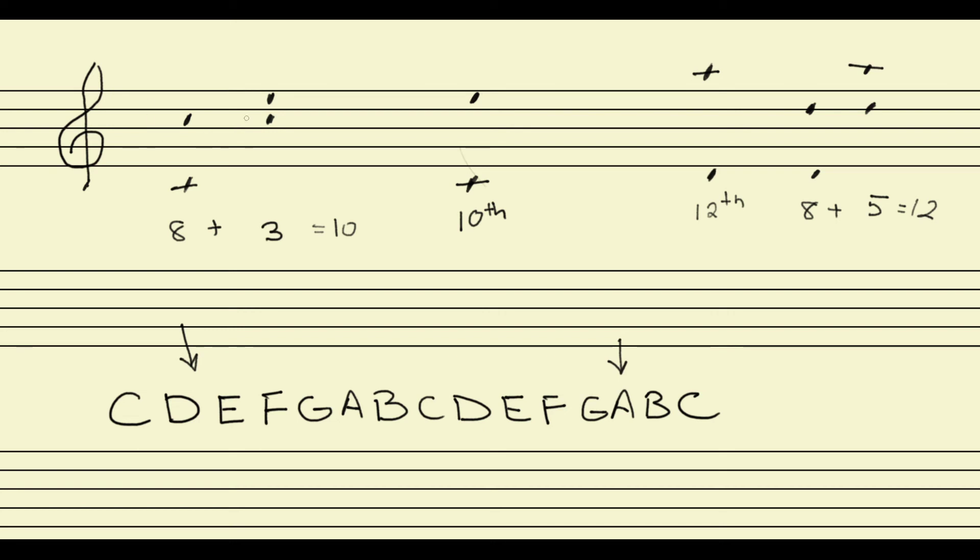And for the really nerdy amongst you, that's because we're sort of counting this middle note twice. We're counting that C twice. We're counting C, D, E, F, G, A, B, C, then we count it again to make the next interval: C, D, E. So the actual number of the compound interval is always going to be one less than what we would get if we added up, using arithmetic, the actual numbers of the intervals.